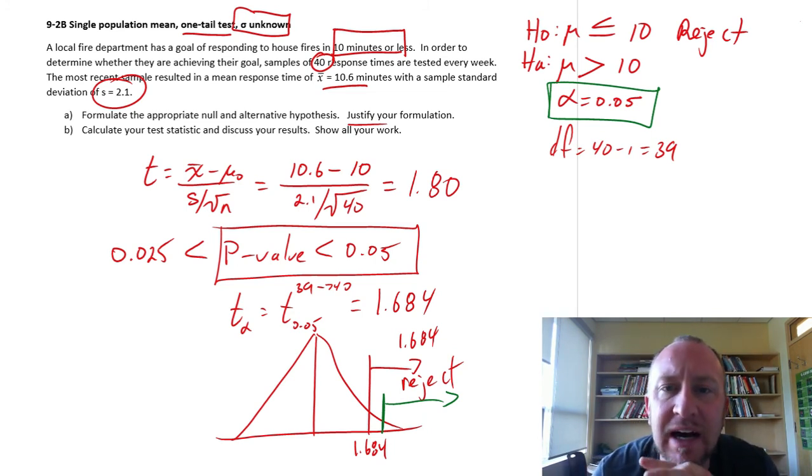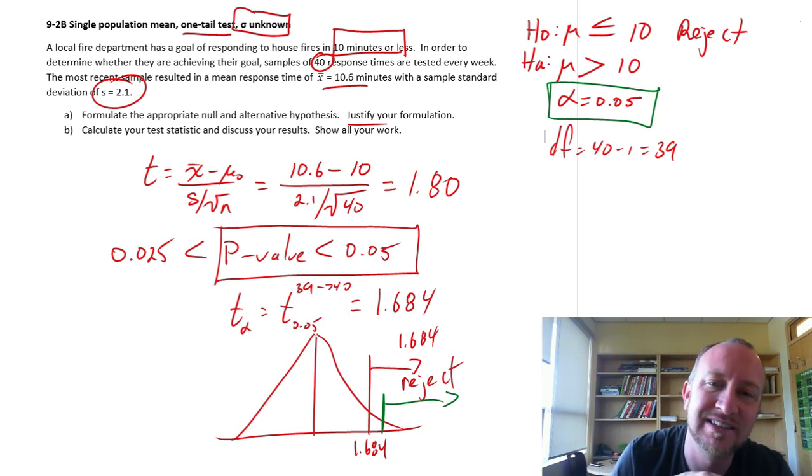Okay, so we have evidence that supports the alternative here, which means that there's a problem here, guys. You're not meeting your goal of responding to these house fires in 10 minutes or less, so we better take some action. Okay, good. That's it. Sorry for that little mistake there. Just assume the whole time that we were working with alpha of 0.05, and alpha of 0.03 would not work, given the limitations of the t-tables. Okay, thank you. See you again. Bye-bye.